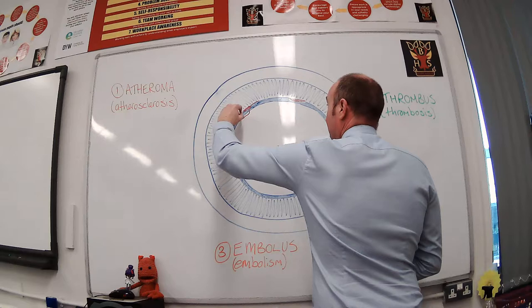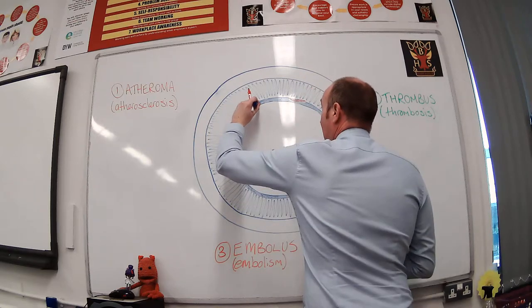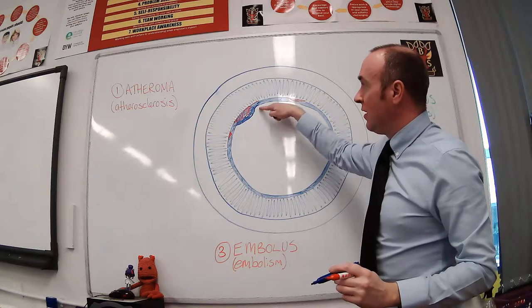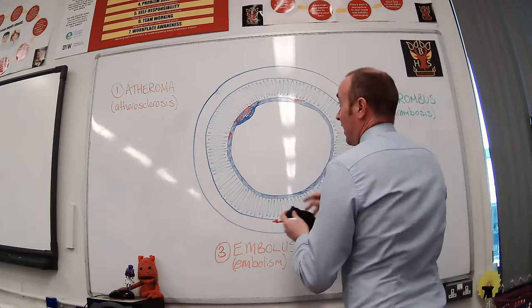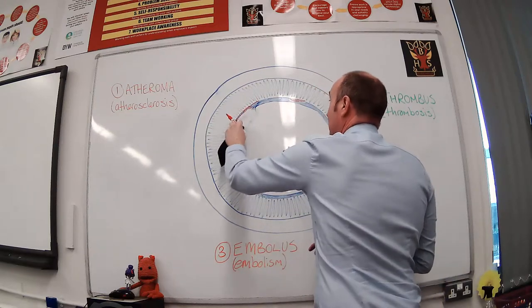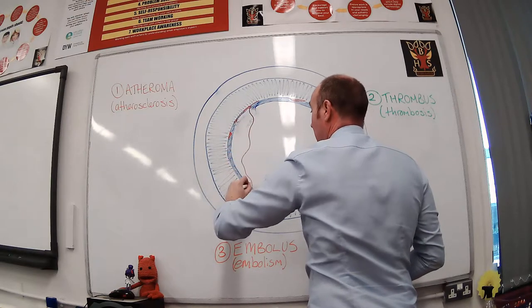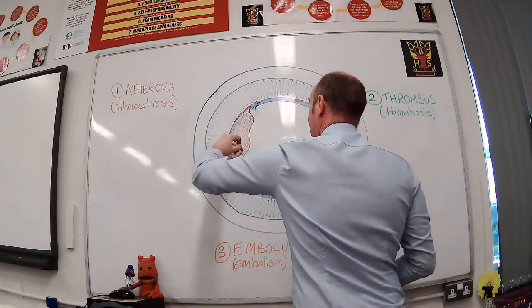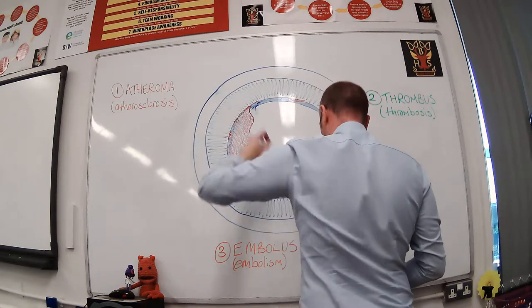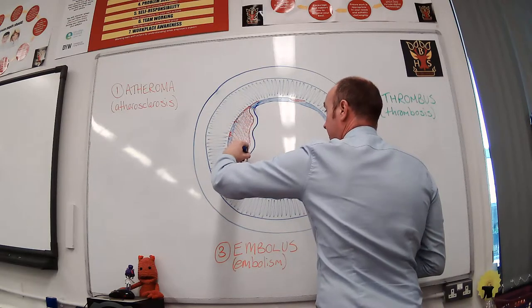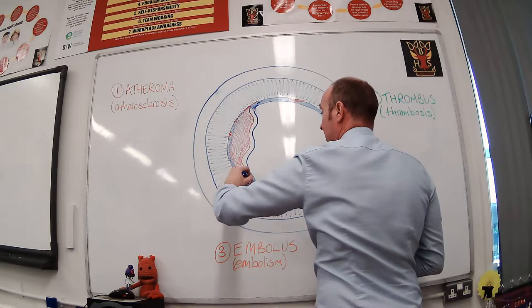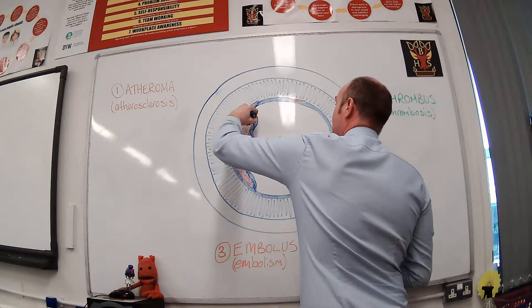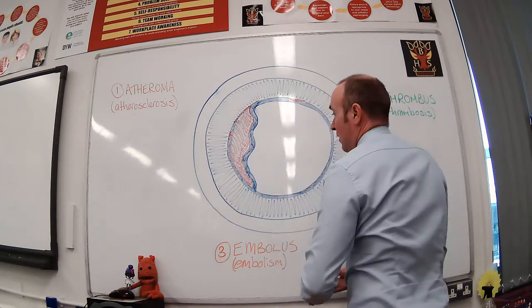You can hopefully see, or certainly I'm attempting to illustrate here, that where an atheroma occurs is underneath the endothelium. So as it develops and gets bigger, it's still underneath the surface of the endothelium. What I'm attempting to show you now is the knock-on effect of an atheroma being allowed to grow kind of out of control. What you can hopefully see has started to occur is that the lumen has become far smaller than it was. That's the main problem with an atheroma, is the fact that it makes the lumen much smaller.